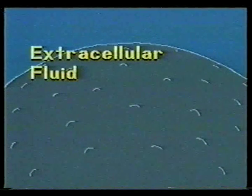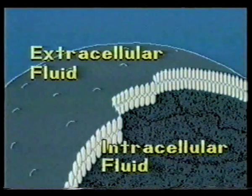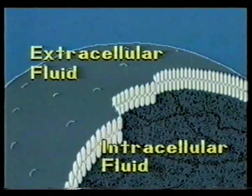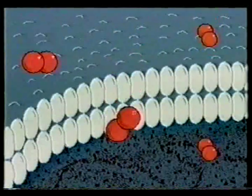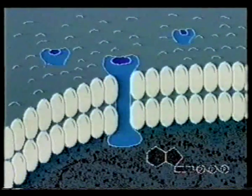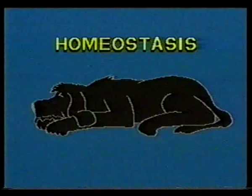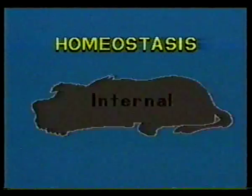Inside every living organism is an inner sea. This sea is divided between extracellular fluid and intracellular fluid. Small changes constantly adjust the balance between the fluids of this sea. These changes are the foundation of homeostasis, a process that maintains a steady state inside.